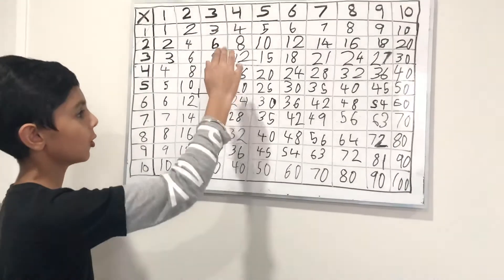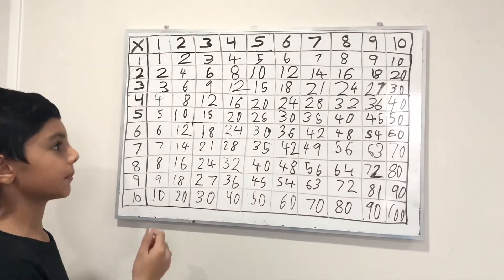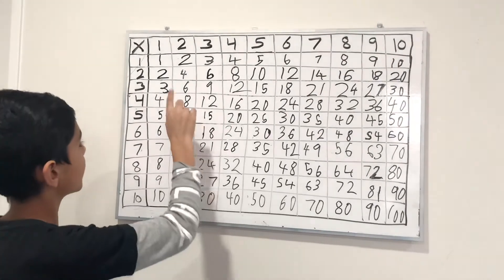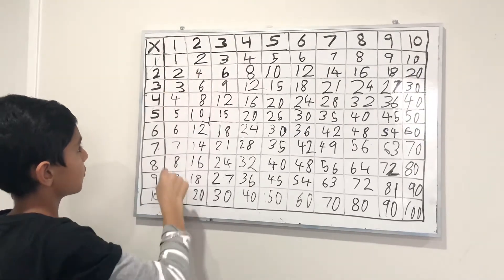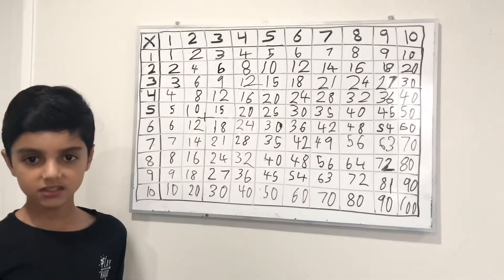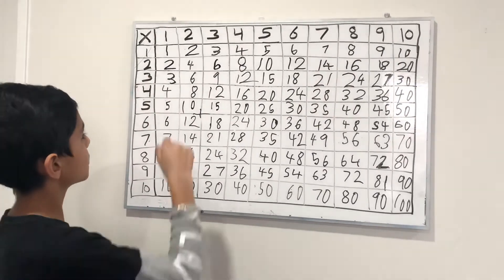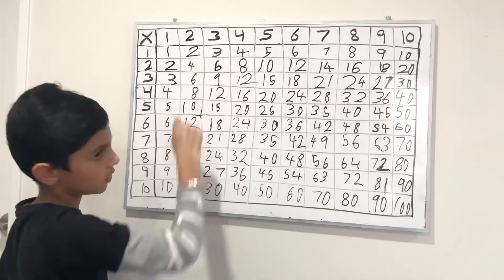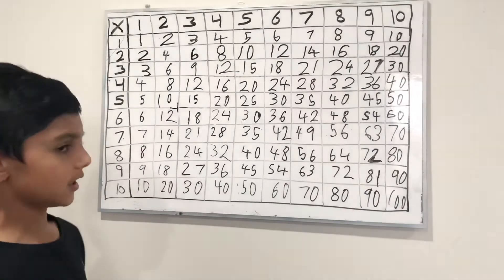I have filled this whole grid, and now let's watch some patterns in this grid. So if you see the column of 1 and the row of 1, they have the same numbers. And if you look at the second row and the second column, they also have the same numbers. Similarly for 3, 4, 5, and up to 10.